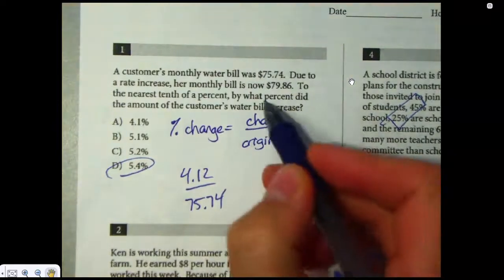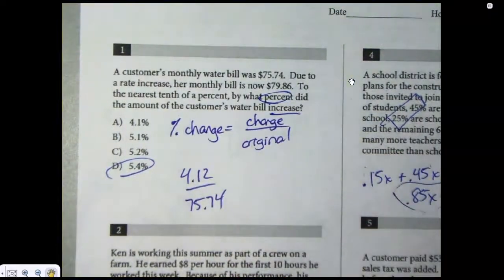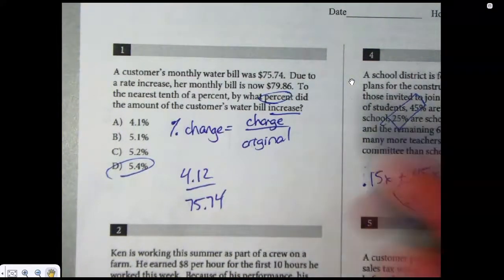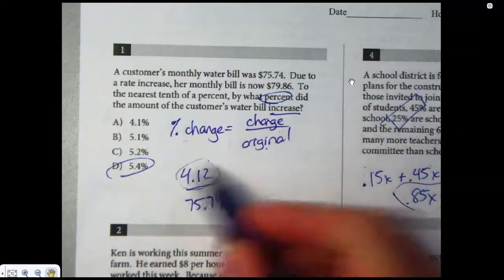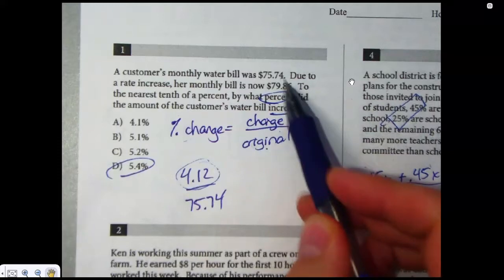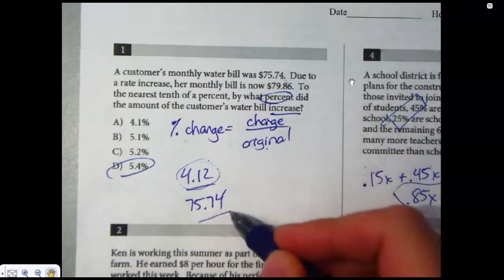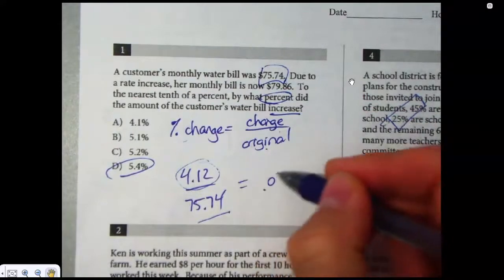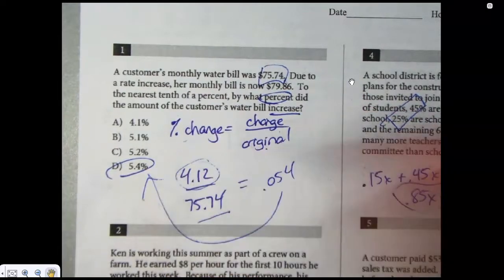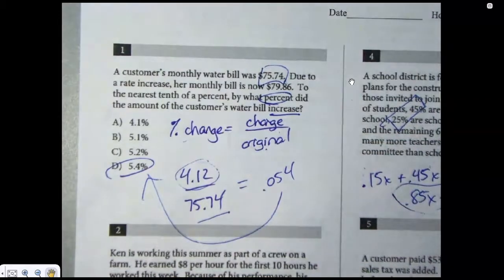Number one here is asking about a percent change. So what percent did we increase? That's basically saying what percent did it change. So this is the percent change equals change divided by original. So put the amount that it changed here. So that's just subtracting these two and then the original amount. So that's what it used to be. Divide those and you get like 0.054 and then if you turn that into a percent, there we are.